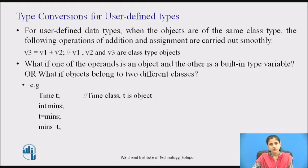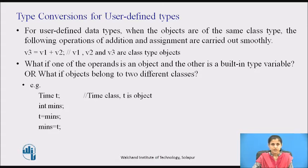We have seen type conversions for built-in types. What happens when they are user-defined data types? Consider the statement that adds two objects and assigns the result to a third: v3 = v1 + v2, where v1, v2, and v3 are class-type objects. When the objects are of the same type, the addition and assignment operations are carried out smoothly and the compiler does not make any complaints. After addition, the values of all data members of the right-hand object are simply copied into the corresponding members of the object on the left.